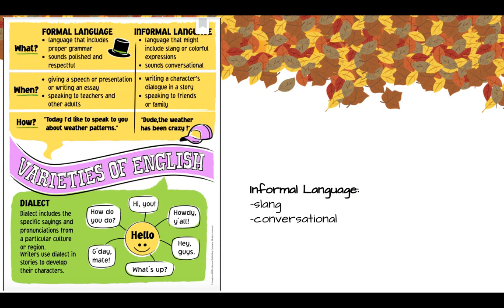Readers, there are varieties of English, meaning that there are different ways we speak and write depending upon our audience. For example, we use informal language when we're speaking to our friends and family. We might use words like 'yeah' or 'cool,' or expressions like 'that was a piece of cake.'